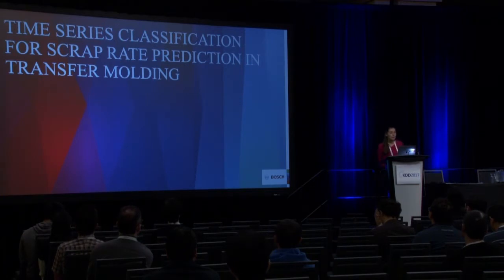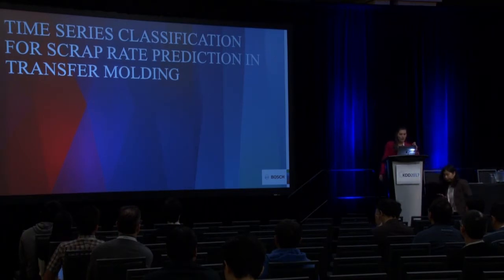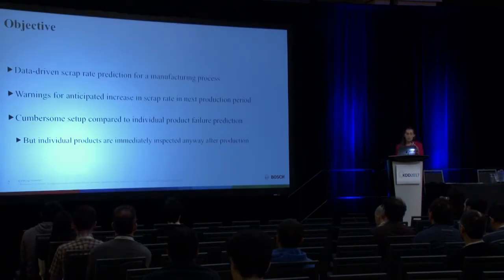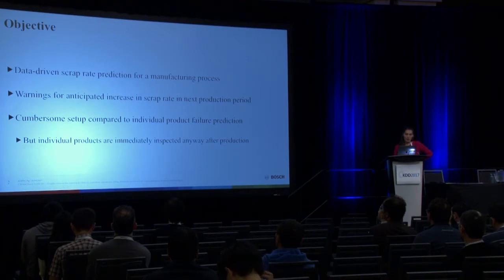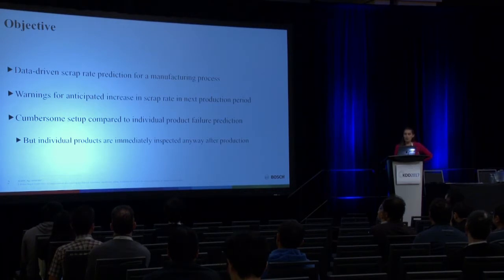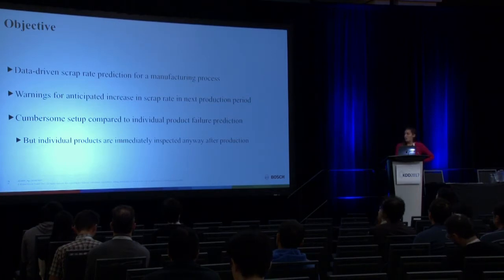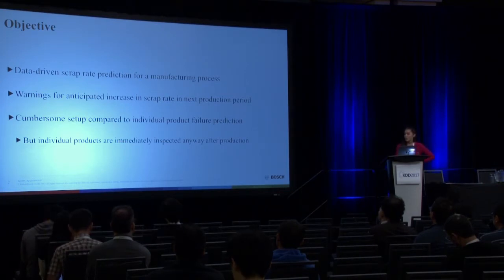This presentation is about time series classification for scrap rate prediction. The goal was to design a data-driven scrap rate prediction system for a manufacturing process called transfer molding, which is able to give warnings if the scrap rate will increase in the next production period. While classifying individual products as scrap or good would be trivial, it makes no sense here because products are immediately inspected after production.